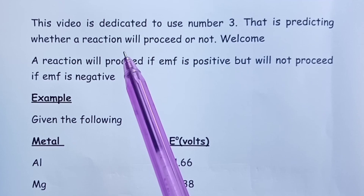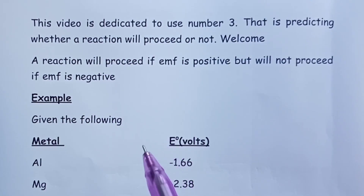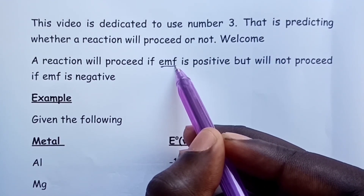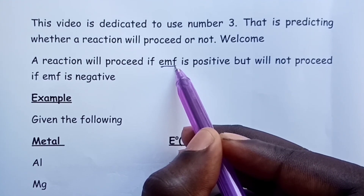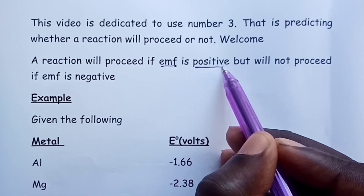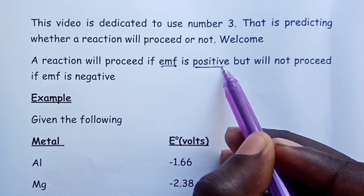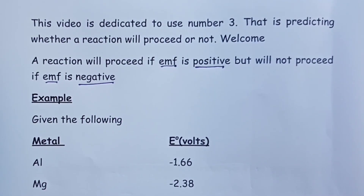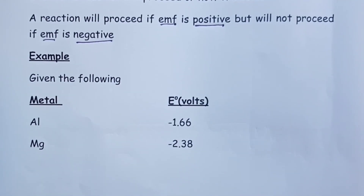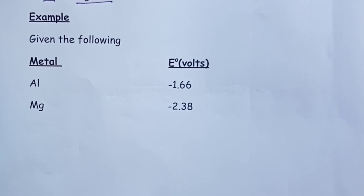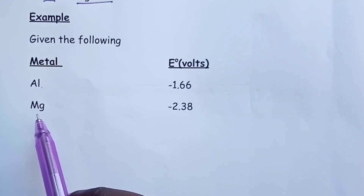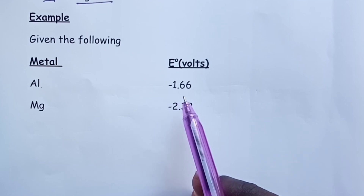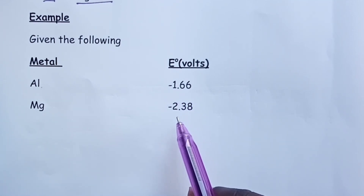A reaction will proceed if the EMF of the cell obtained by connecting the two half cells is positive, but will not proceed if the EMF calculated is negative. For our example, we use familiar metals: aluminium and magnesium. Their E naught values are aluminium negative 1.66 volts and magnesium negative 2.38 volts.